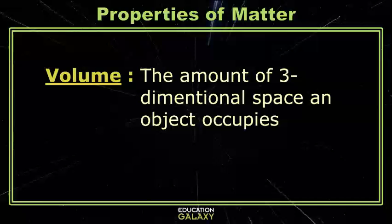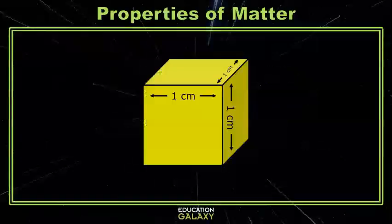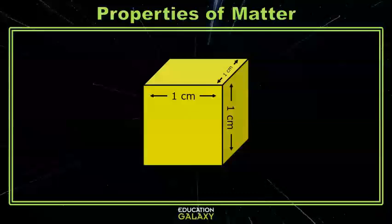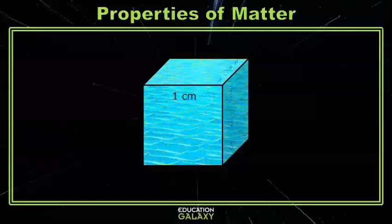Volume is the amount of three-dimensional space something takes up. Volume has a lot of different measurements, like liters, cubic meters, gallons, ounces, and many more, but they all just refer to the space an object takes up. If I had a cube that was one centimeter on all the edges, it would be one cubic centimeter. I could pour in a liquid to take up that same amount of space, or have the same volume.